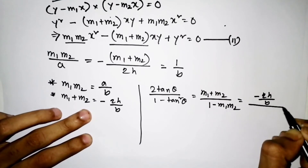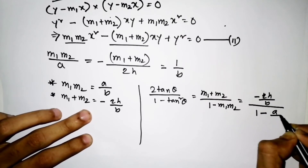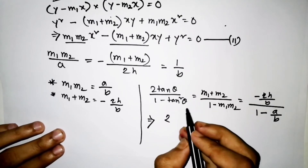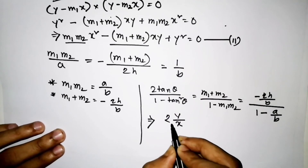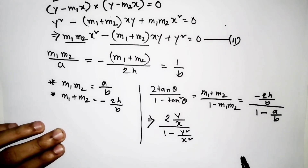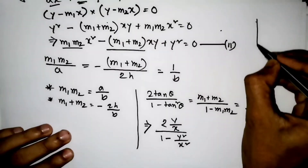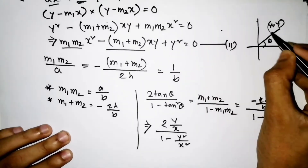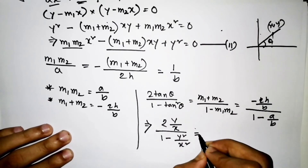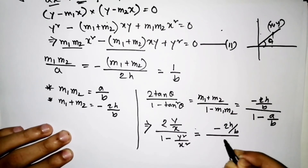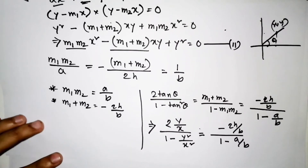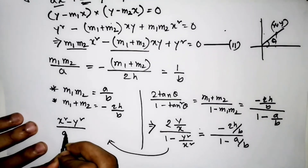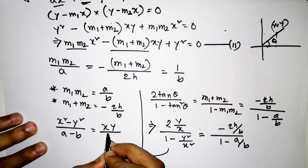Substituting m₁ + m₂ = −2h/b and 1 − m₁m₂ = 1 − a/b = (b − a)/b, and letting tan θ = y/x, we simplify to get the bisector equation: (x² − y²)/(a − b) = xy/h.